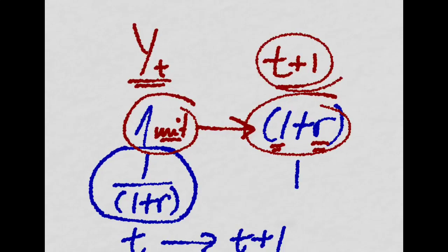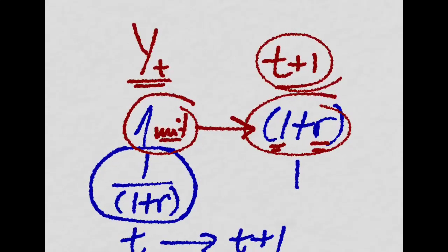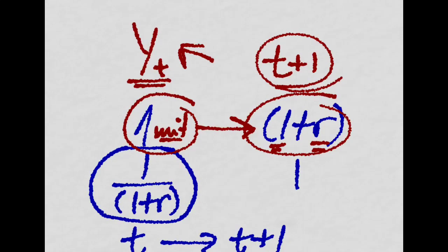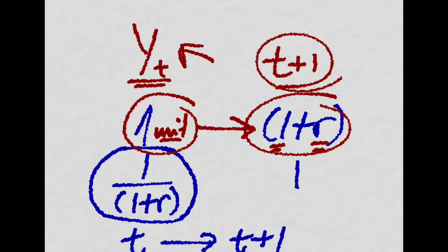Because in this model, output is the same as income and also consumption is measured in terms of output. So everything is in the same units as output for simplicity. There is no money here. Everything is in real terms.